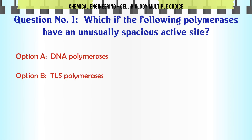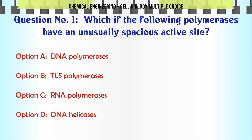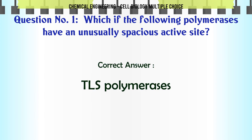Which of the following polymerases have an unusually spacious active site? A. DNA polymerases. B. TLS polymerases. C. RNA polymerases. D. DNA helicases. The correct answer is TLS polymerases.